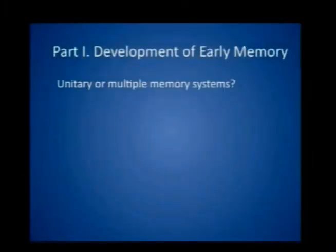So the first bit: memory development. Unitary or multiple memory systems. We've already had discussion this morning about the differences between implicit and explicit memory, and from a memory development point of view, this is not as clear-cut as we would like it to be. Some people believe that there are in fact multiple memory systems — there could be anywhere up to 10 or 15 different memory systems — but let's take the division of two memory systems versus a single memory system that can be tapped by different tasks.